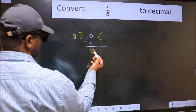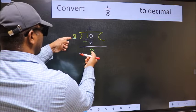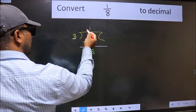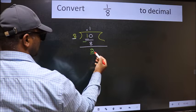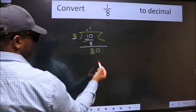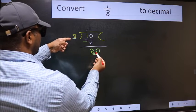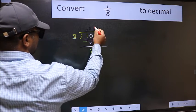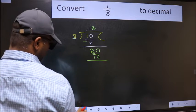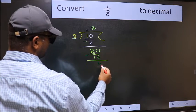Now here we have 2, here 8. 2 is smaller than 8, and we already have the decimal, so this time we can directly take 0. So 20. A number close to 20 in the 8 table is 8 twos are 16. Now we should subtract. We get 4.